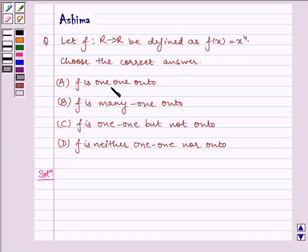We have option A: f is one-one onto. B: f is many-one onto. C: f is one-one but not onto. D: f is neither one-one nor onto.